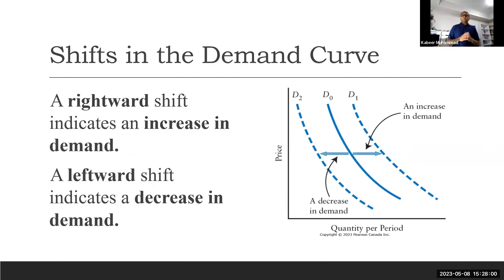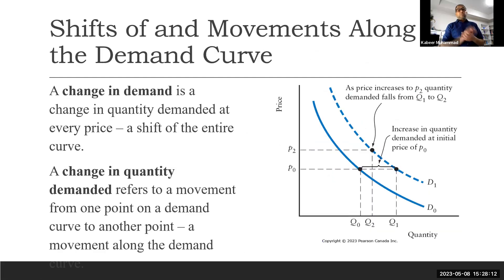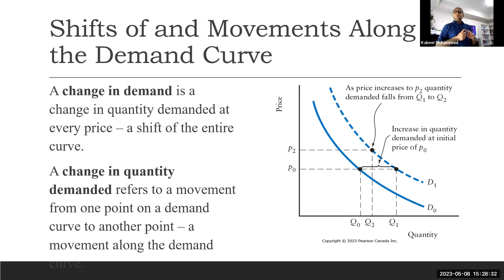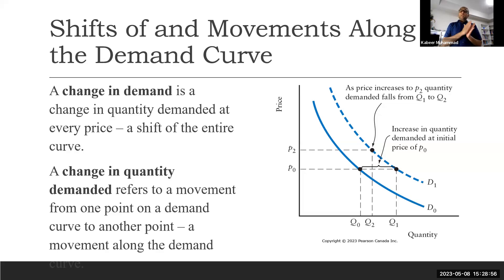In general, an increase in demand is reflected by a rightward shift of the curve, and a decrease in demand is reflected by a leftward shift. The key takeaway is the distinction between 'change in demand' and 'change in quantity demanded.' A change in demand is due to all the determinants discussed: consumer income, preferences, price of related goods (substitutes or complementary), population, weather, and expectations — and it causes a shift of the entire curve.